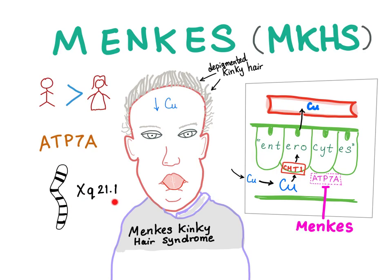The chromosomal location is XQ21.1 — X is the chromosome, Q is the long arm, and 21.1 is the segment. ATP7A is the gene affected.